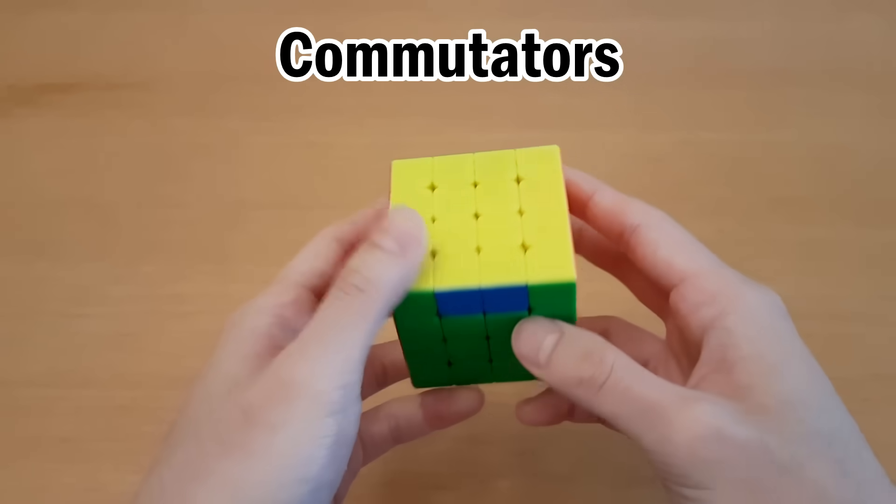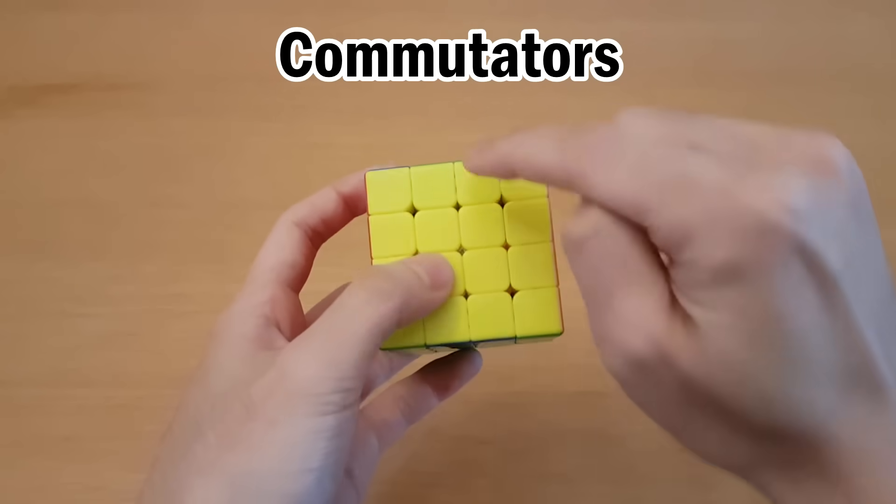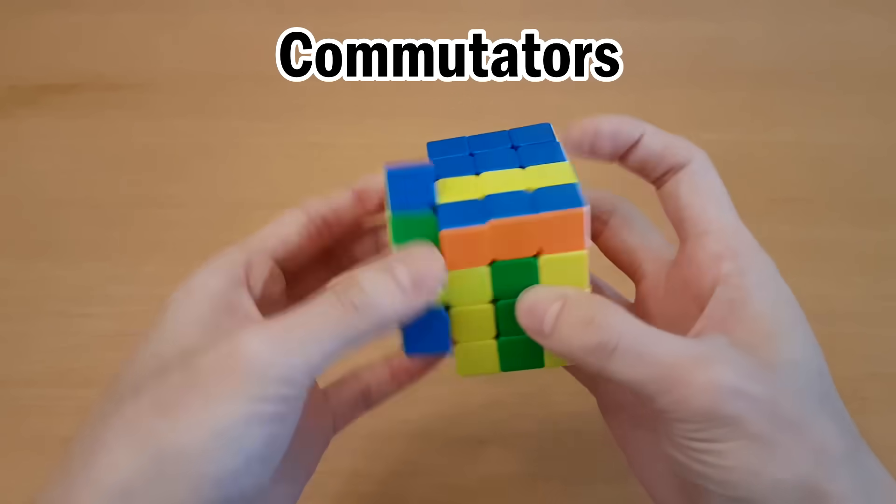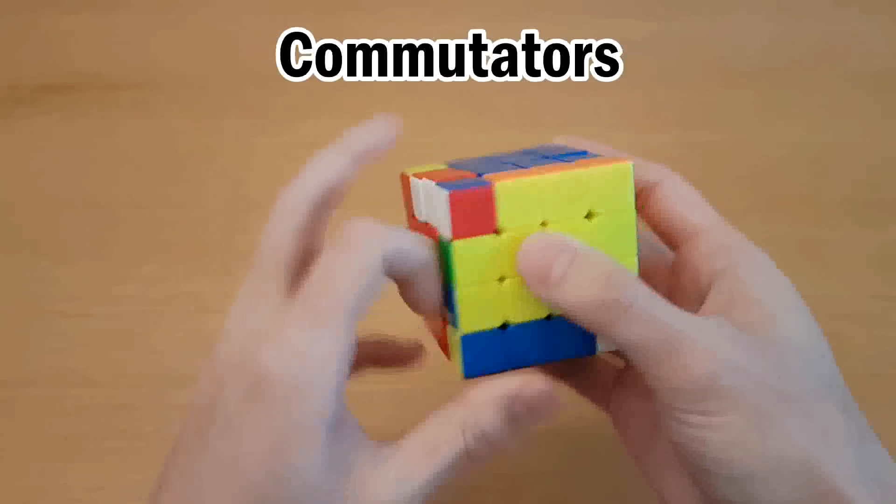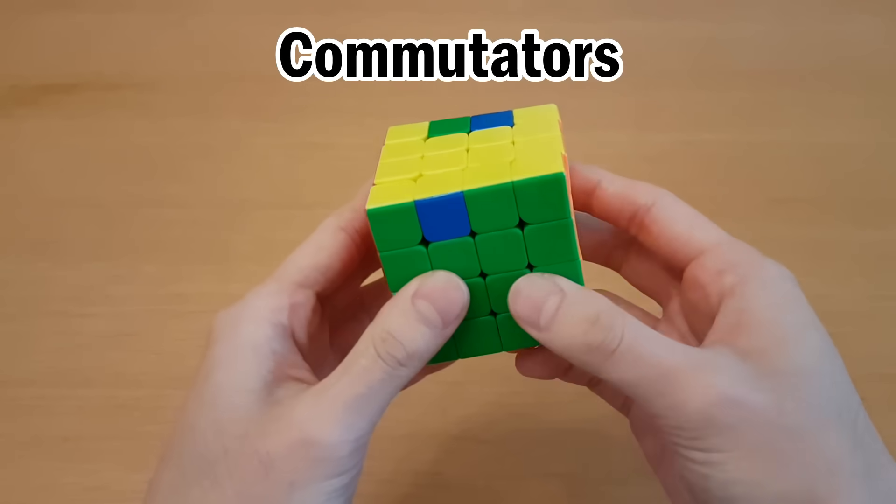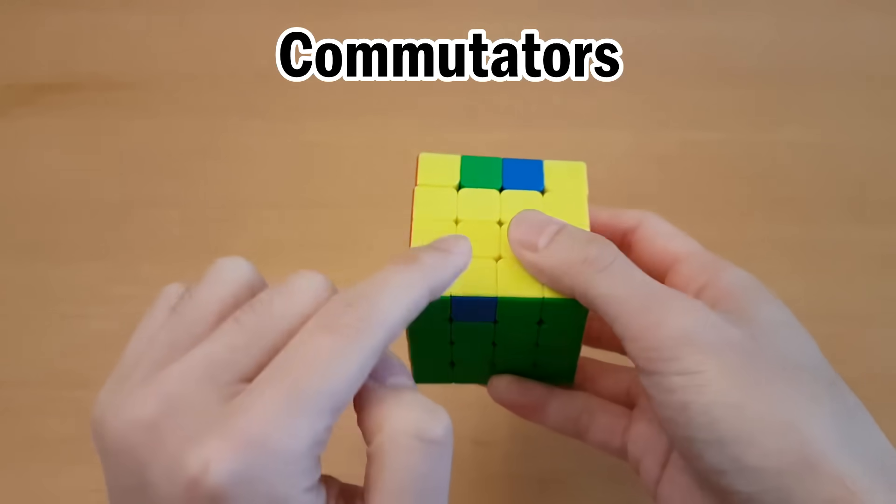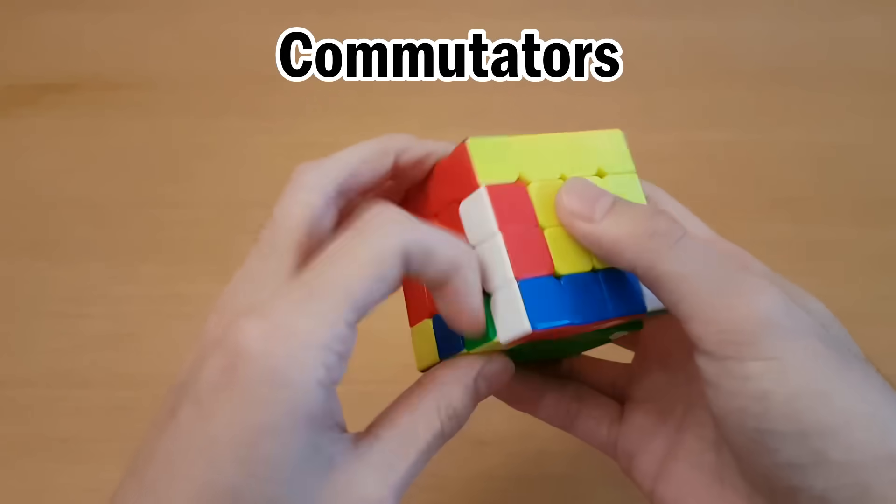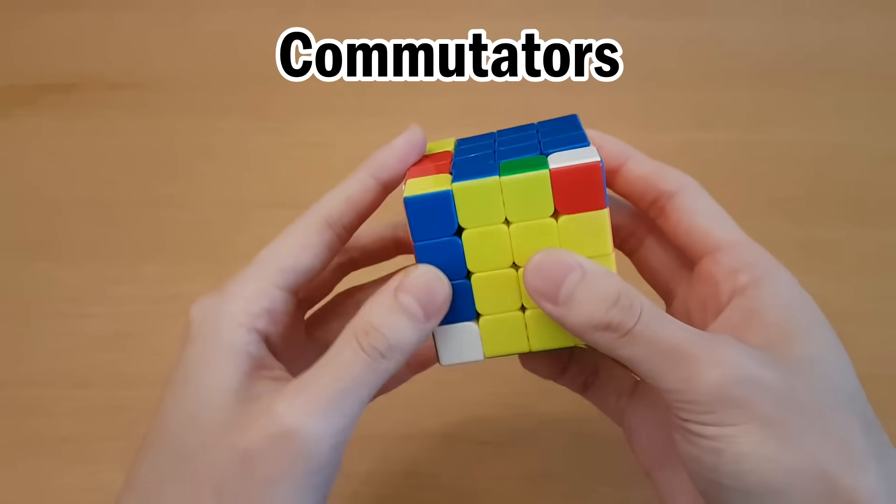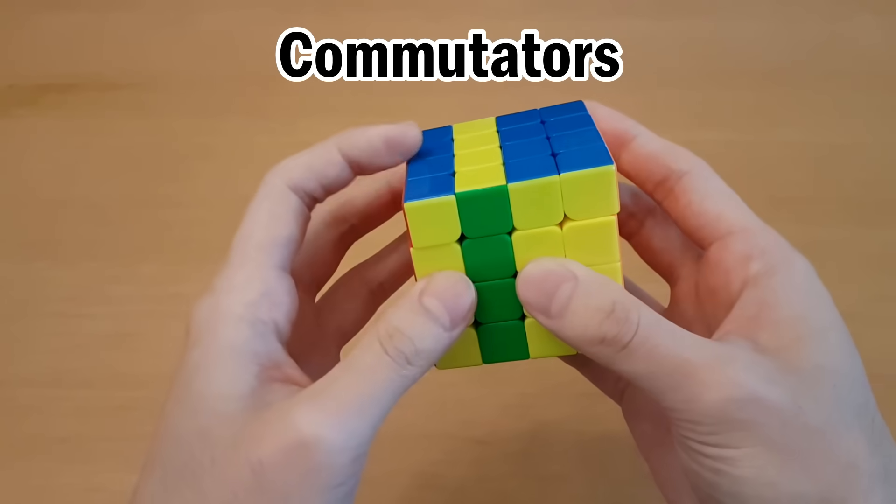So I'm going to move this one up here, flip this edge, move it back down, undo that flip. And now I've solved this one, and I have three left to go. So here, I can flip this one, probably could have canceled moves. Slice this, undo the flip, and undo the slice.